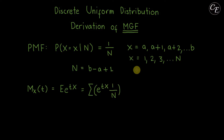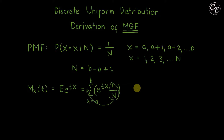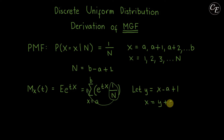The random variable x has values from a to b, so the summation runs from x equals a until x equals b. Since one over n is a constant expression, we can move it outside of the summation. Then let us do a transformation: let y equal x minus a plus one. From this, x will be equal to y plus a minus one. Let us substitute this expression for x.